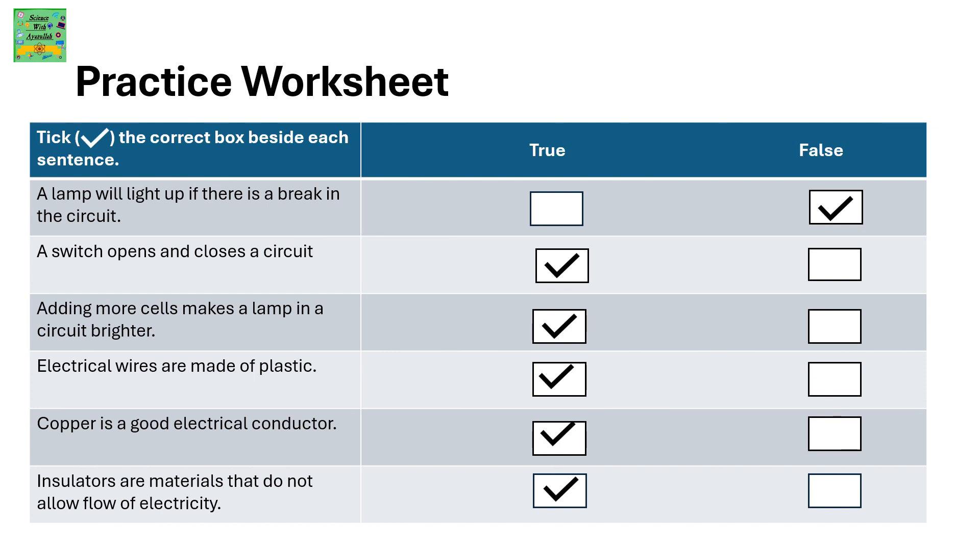Practice worksheet. Tick the correct box beside each sentence. A lamp will light up if there is a break in the circuit. It's false because if there is a break in the circuit, it means it's an open circuit and the electricity won't flow through an open circuit.